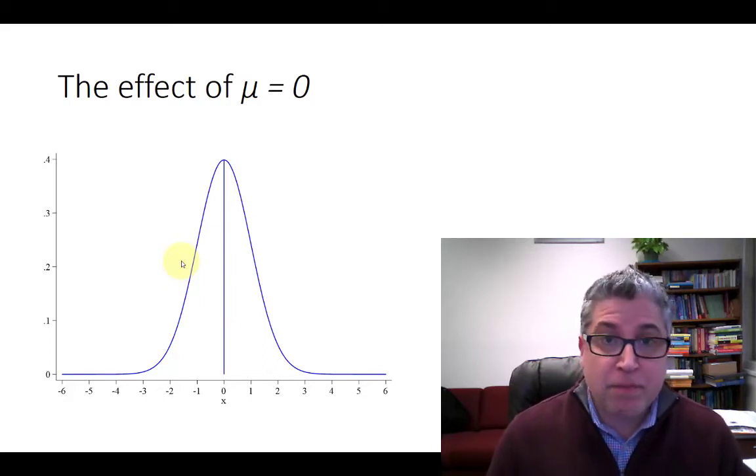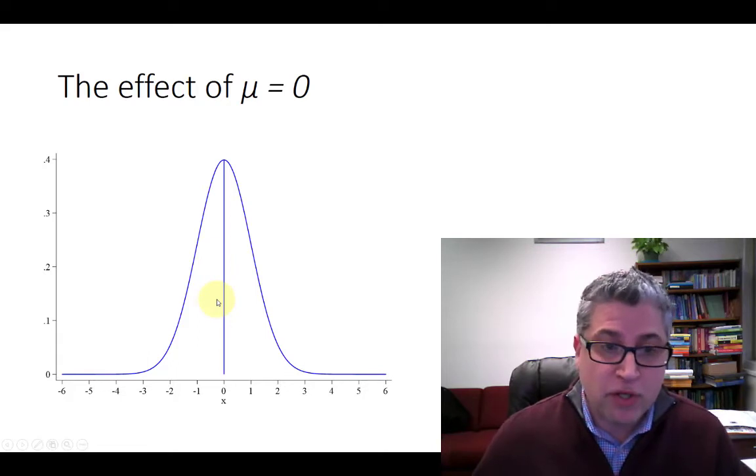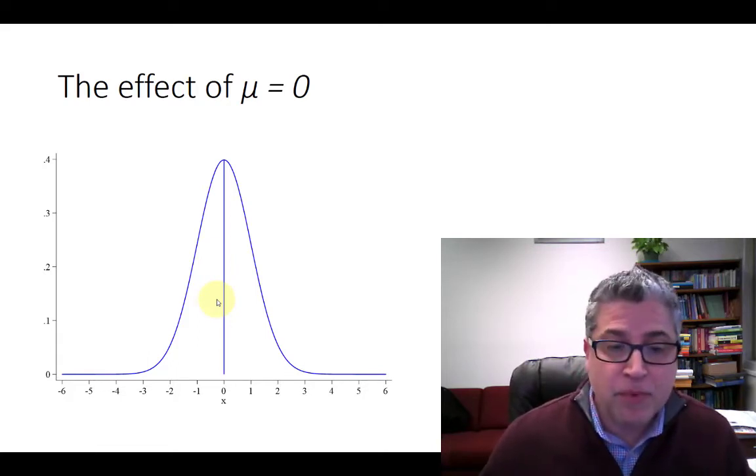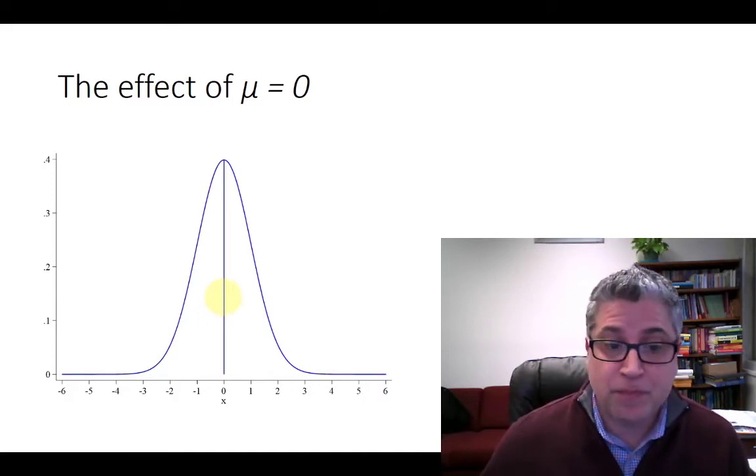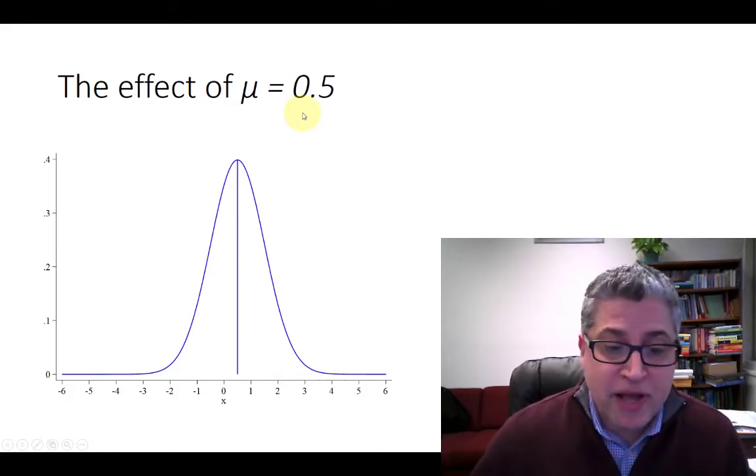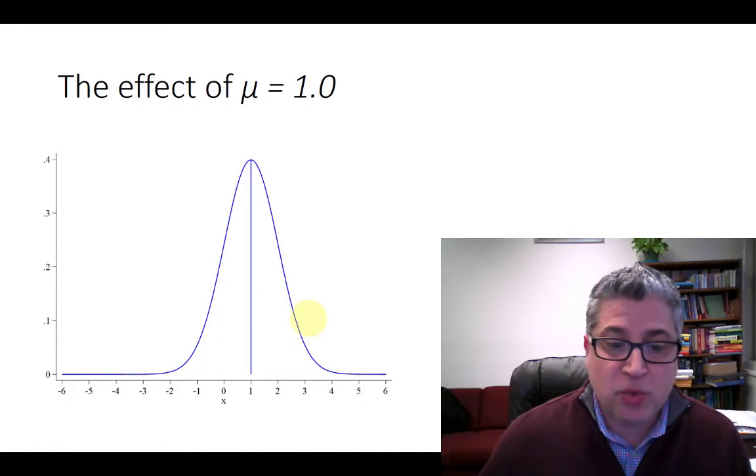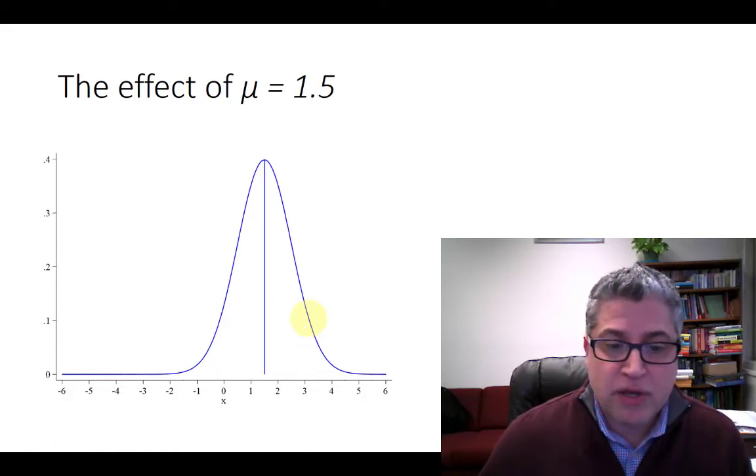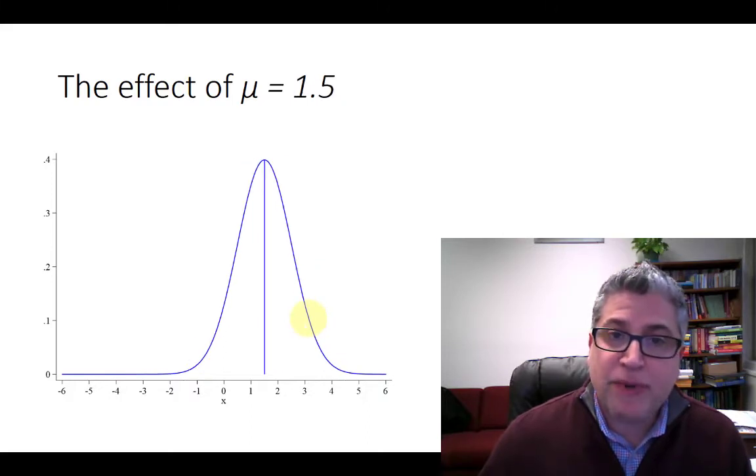Quite simply, changing mu is equivalent to changing the mean of the distribution, and it just corresponds to shifting the curve over so that it's centered over the mean. Here we see a standard normal centered right over zero. But if I were to change the mean to 0.5, now we can see that it's centered right over 0.5. It's just a rightward shift. If I were to change mu again to 1, it just shifts it over. I can basically center this thing over any value that I want just by changing mu.